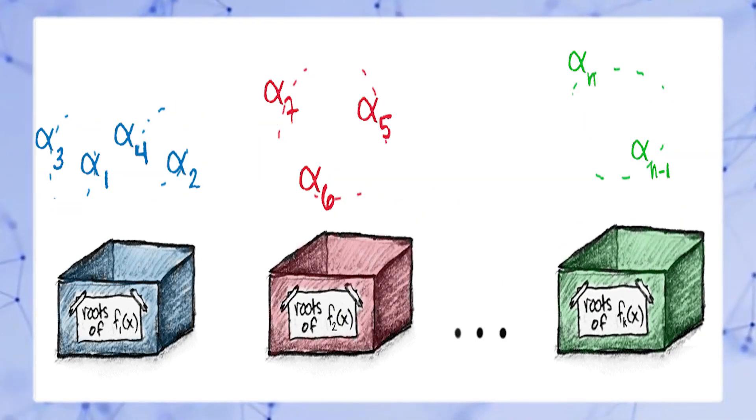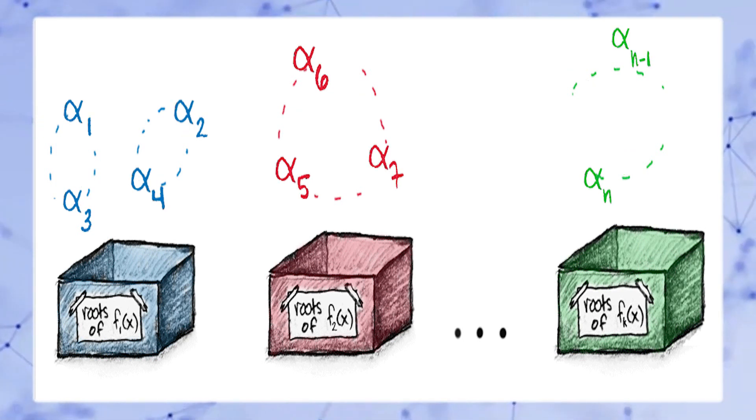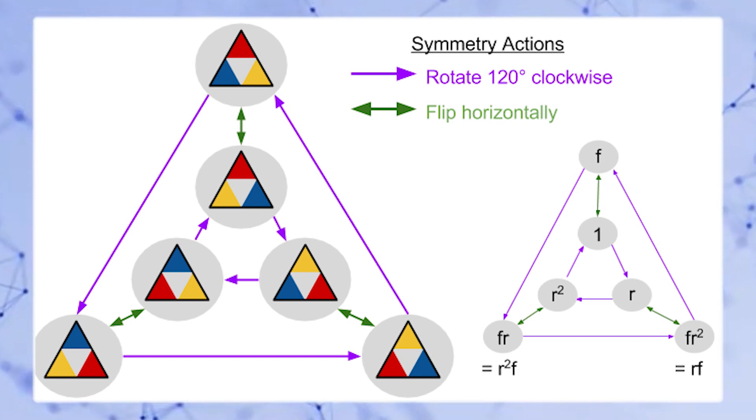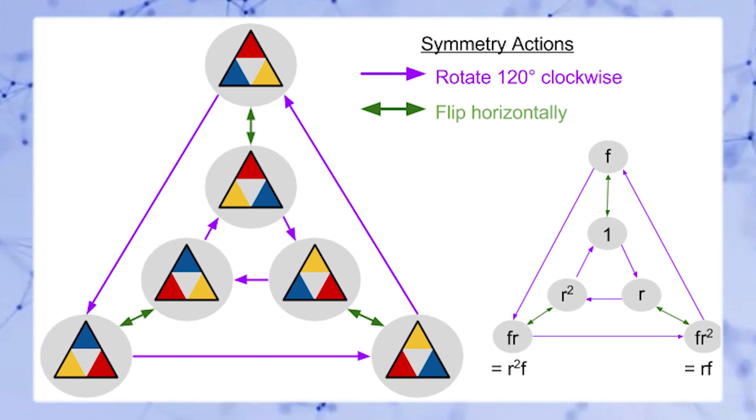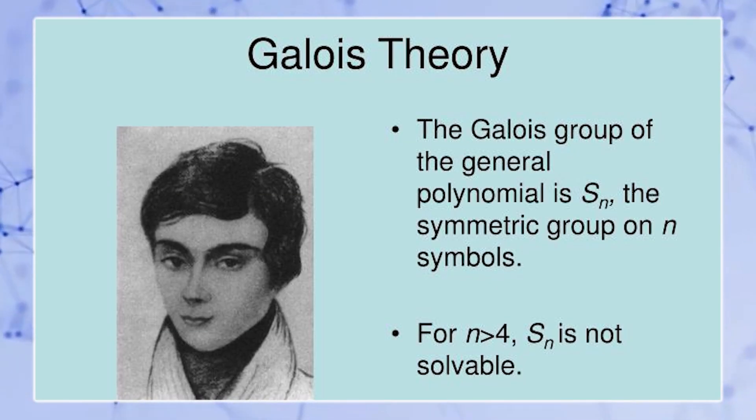Galois's key insight was that the permutations or symmetry of the roots of n degree equation form a group called the Galois or symmetric group of that equation. Galois called an equation solvable if it splits into smaller pieces in a particular way.